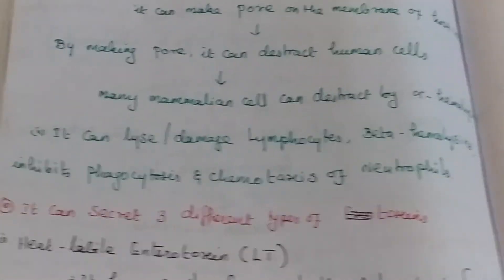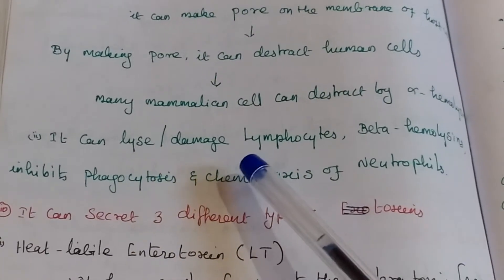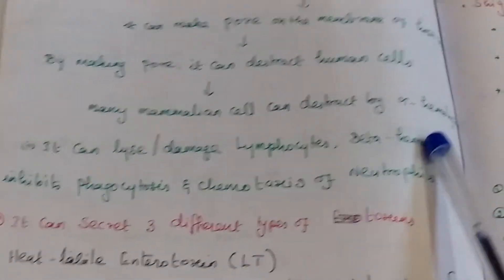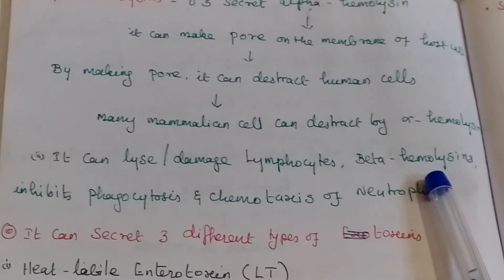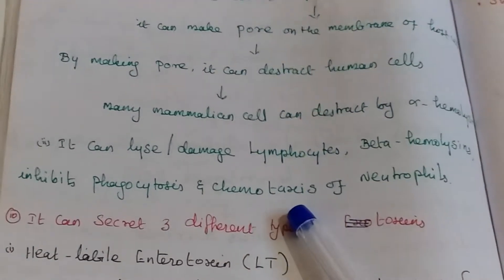Alpha-hemolysin can also lyse or damage lymphocytes — beta-hemolysin activity — and it inhibits phagocytosis and causes chemotaxis of neutrophils.